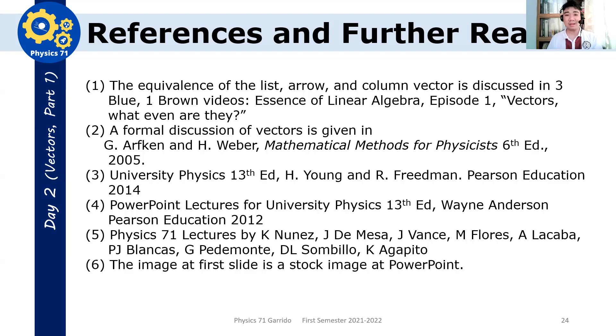Okay. Thank you. So, here are some references and further reading. If you want a more in-depth discussion on the equivalence of the list, arrow, and column vector, 3Blue1Brown has a good video on that. I really suggest his Essence of Linear Algebra. A formal discussion, as I said at the first part of this lecture, the vectors being quantities or objects with magnitude and direction, it's only a description, not a definition. There's a more formal definition of what vectors are. Arfken has a good introduction on that. Of course, our main reference, Young and Friedman and Rice University books, and you have your Physics 71 lectures.